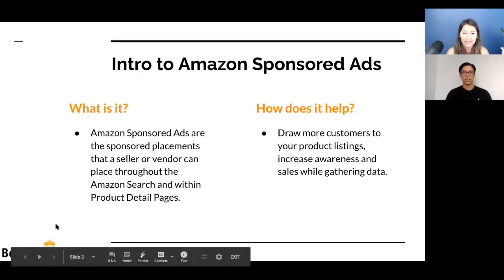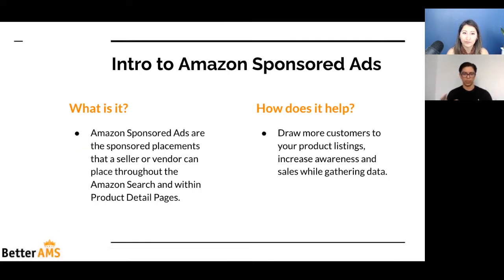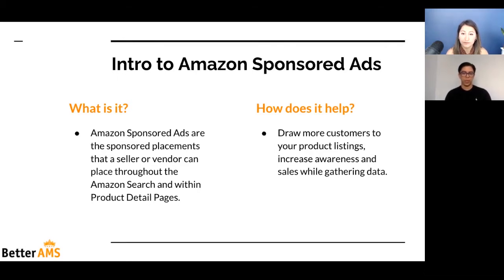First, an intro to Amazon sponsored ads — or just, what is it? Amazon sponsored ads are the sponsored placements that a seller or vendor can place throughout the Amazon search and within product detail pages. Based off a search, you can place an ad for people to see it, or you can target products for people to see your ads below that particular product. It helps you draw more customers to your product listings, increase awareness, and generate sales while gathering data. Amazon really knows its customers, so you can pull data at the same time you generate sales and build that up in the process.